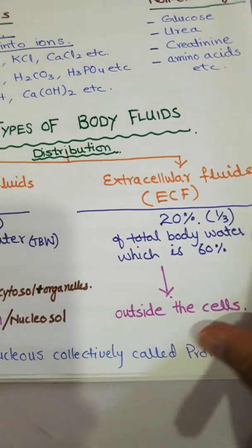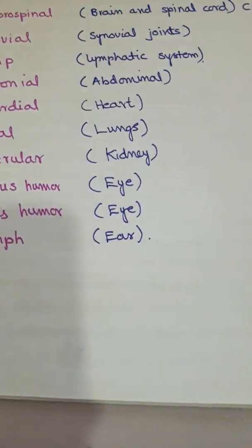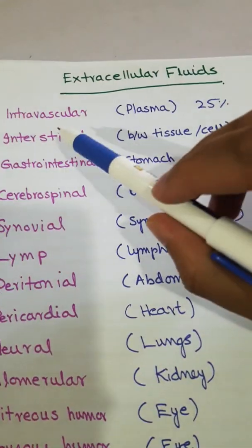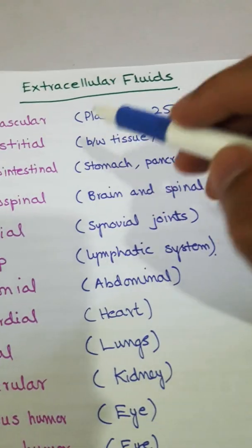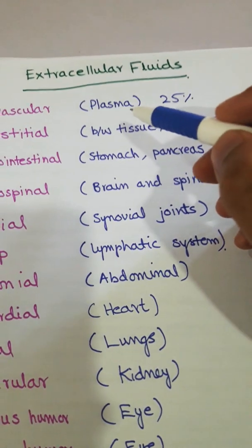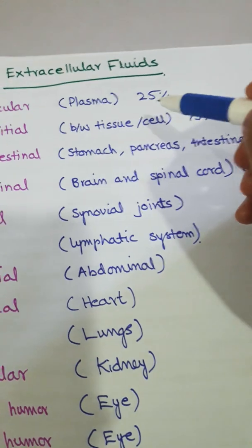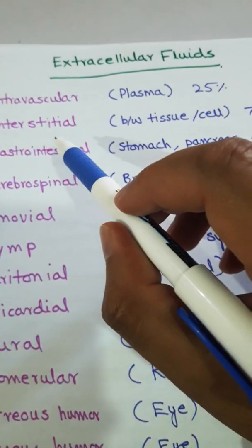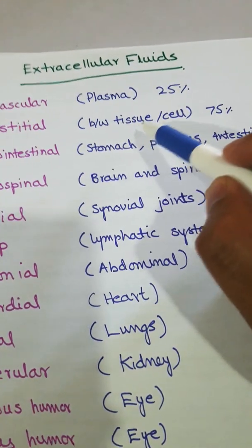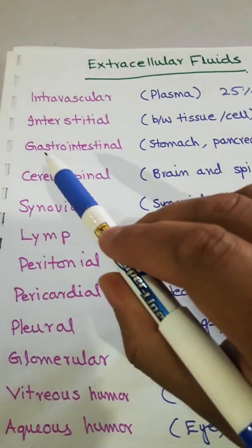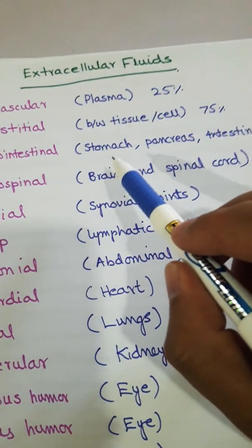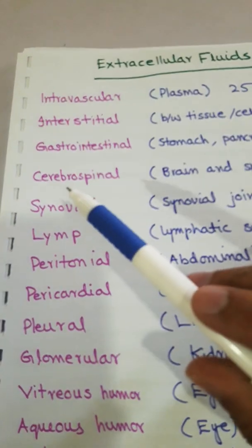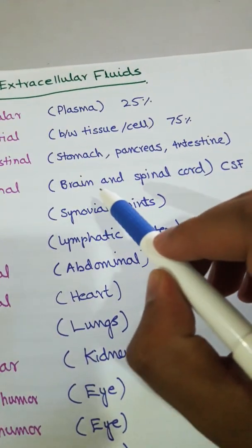Extracellular fluids are fluids outside the cell, divided into several categories. Intravascular fluids are present inside blood vessels — plasma inside blood is an extracellular fluid, constituting about 25%. Interstitial fluids are the fluids between tissues or cells, constituting 75%. Gastrointestinal fluids include stomach juices secreted by the stomach, pancreas, and intestines.